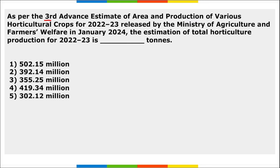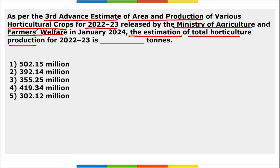As per the Third Advance Estimate of Area and Production of various horticulture crops for FY2022-23, released by the Ministry of Agriculture and Farmers Welfare in January, the total horticulture production for FY22-23 is estimated at 355.25 million tons — an increase of about 8.07 million tons, or 2.32 percent, compared to FY22.